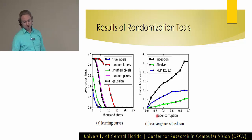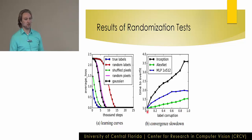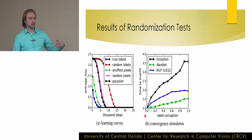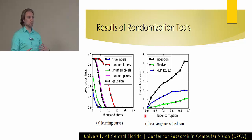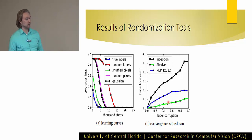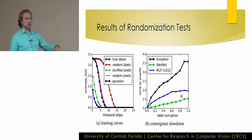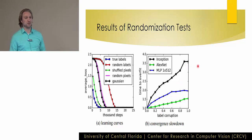Looking at time to overfit: the x-axis is label corruption — right is completely random labels, left is perfect labels. Networks take a little longer to fit completely random data, but still achieve zero training error in not much more time — maybe one and a half to three and a half times as long, just some small constant factor.